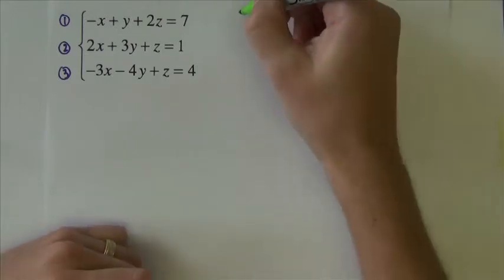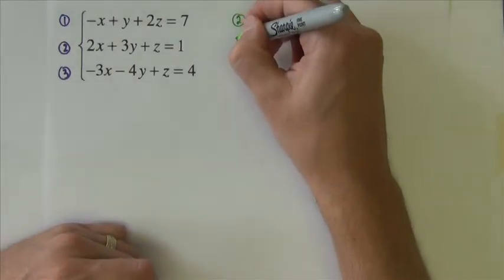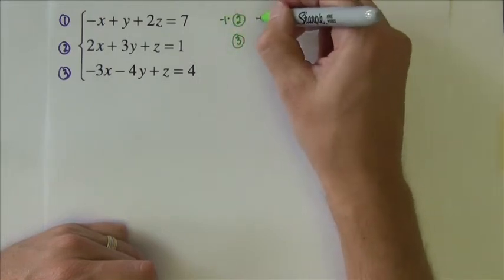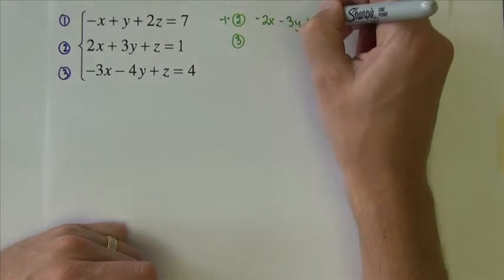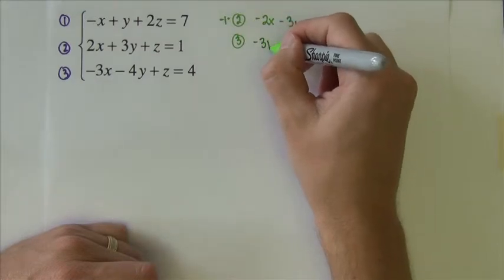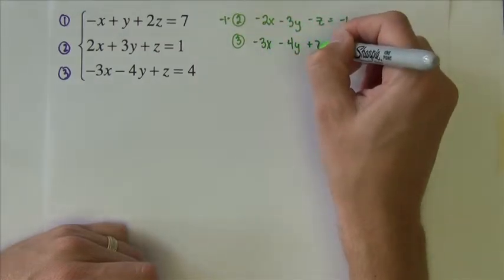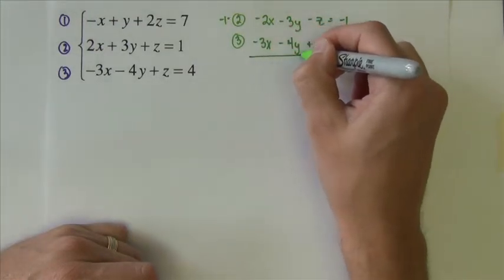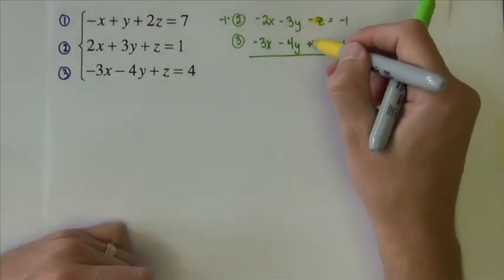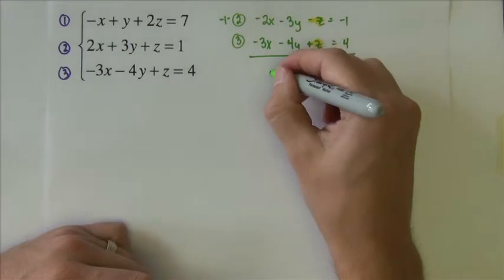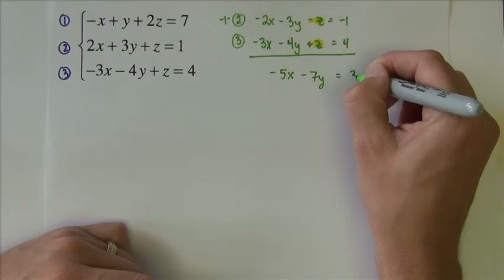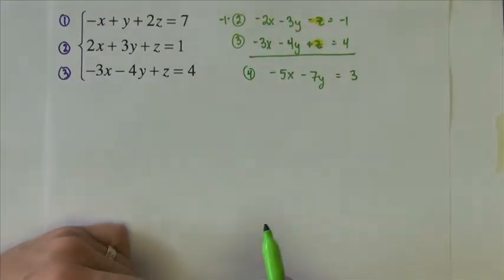So I'm going to begin with equations 2 and 3. I'm going to take equation 2 times negative 1. So negative 2x minus 3y minus z equals negative 1. I'm going to keep the bottom equation negative 3x minus 4y plus z equals 4. And so what happens is these z's cancel out, and we end up with negative 5x minus 7y equals 3. So there's my fourth equation.